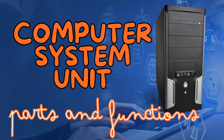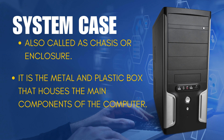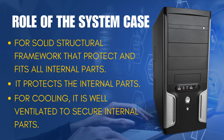Computer system unit — their parts and functions. The first part is the system case, also called a chassis or enclosure. It is the metal and plastic box that houses the main components of the computer. The role of the system case is to provide a solid structural framework that protects and fits all internal parts. It also protects the internal parts and is well-ventilated for cooling to secure internal components.